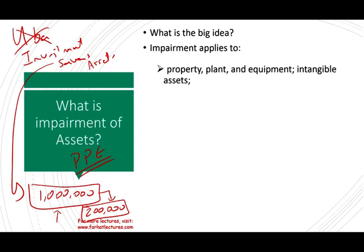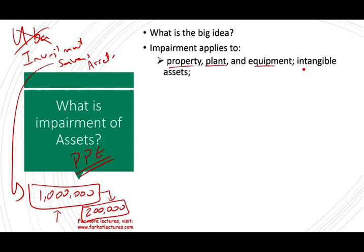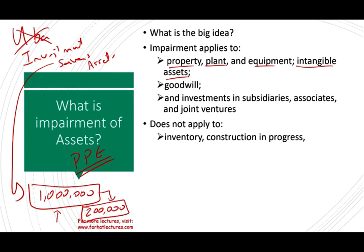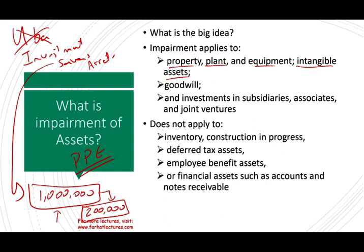Impairment applies to property, plant, and equipment; intangible assets; goodwill; investments in subsidiaries, associates, and joint ventures. It does not apply to inventory or construction in progress, deferred tax assets, employee benefit assets, or financial assets such as accounts or notes receivable — those are subject to allowance and valuation accounts instead.